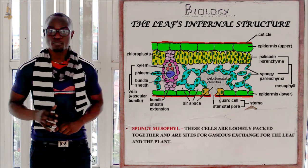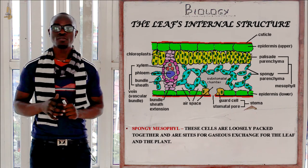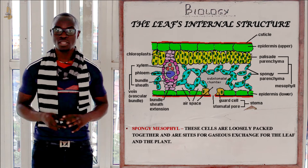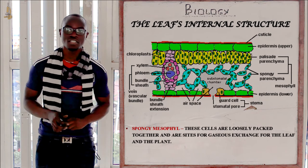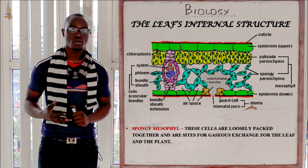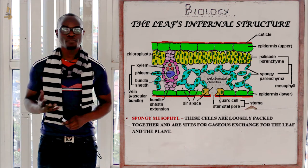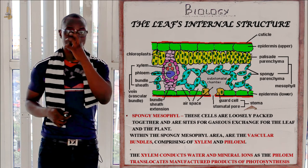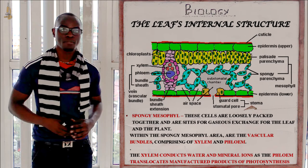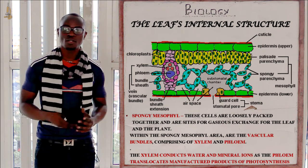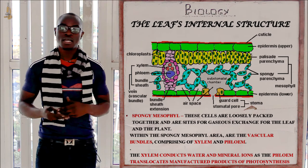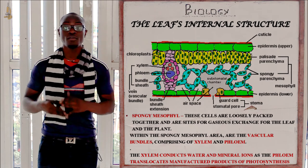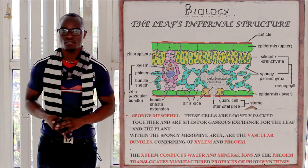Then we have the spongy mesophyll, which mainly comprises of cells that have very large air spaces between them for gaseous exchange and for the trapping of carbon dioxide for photosynthesis. In the spongy mesophyll we also have the vascular bundles, which contain the xylem and the phloem. The xylem conducts water and mineral salts through the leaf, while the phloem conducts the manufactured food substances throughout the leaf and to other parts of the plant.